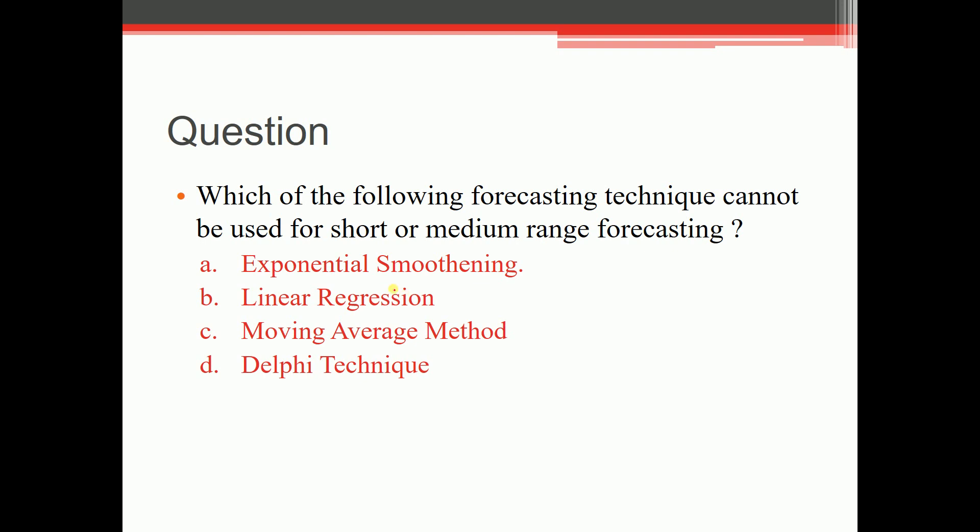So one question, this is a great question. Which of the following forecasting technique cannot be used for short or medium range forecasting? Let's recap. ESM - remember what is ESM? ESM is exponential smoothening method and it comes under time series analysis. And this time series analysis was used for short range. So obviously this is not the correct answer. Then let's see, Delphi technique. This was used for long range. Remember this is of qualitative technique, so it is long range. So this is also not the correct answer. Moving average method - this also comes under time series analysis and used for short range.